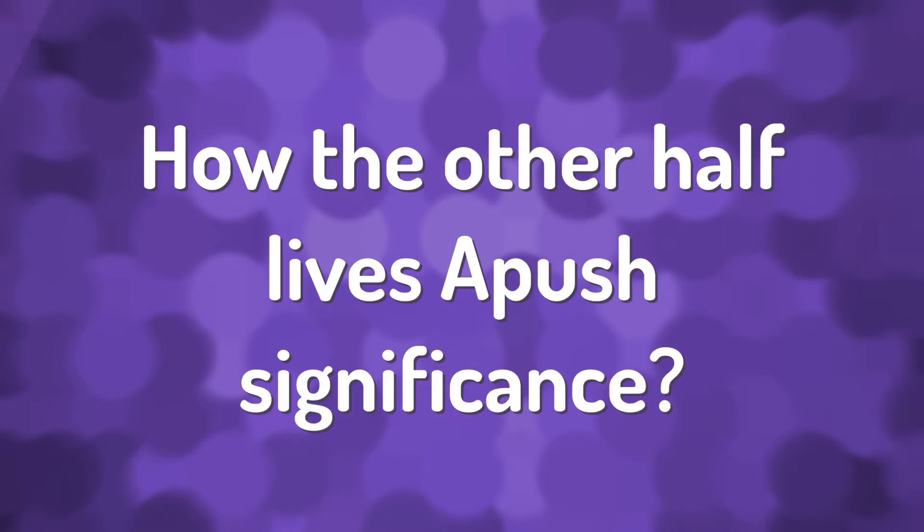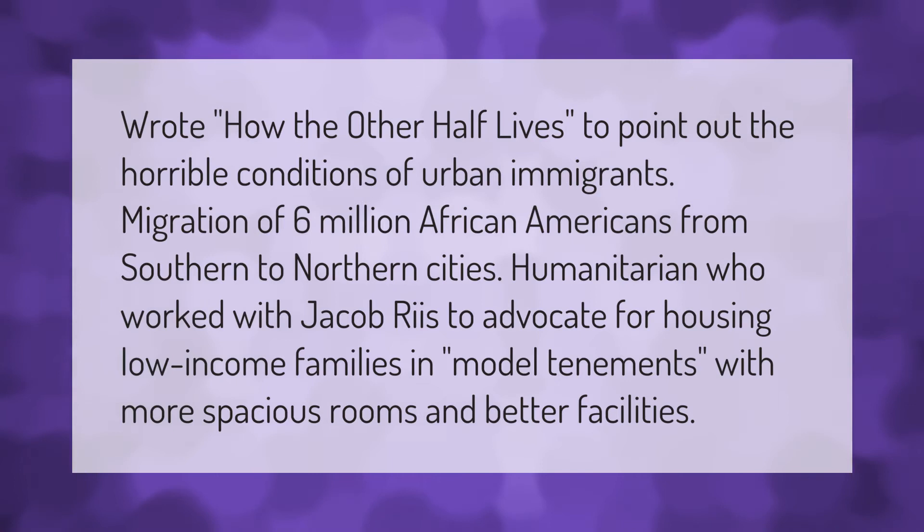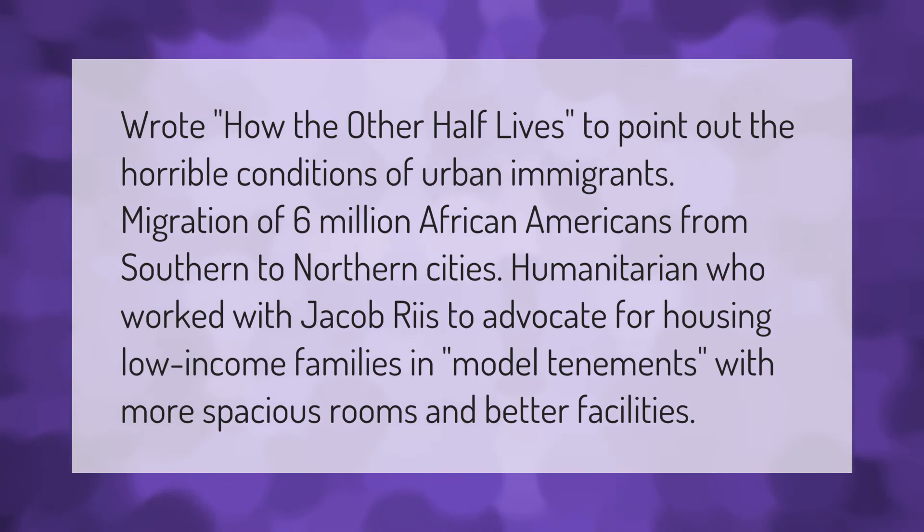Riis wrote How the Other Half Lives to point out the horrible conditions of urban immigrants. This occurred alongside the migration of 6 million African Americans from southern to northern cities. Humanitarians who worked with Jacob Riis advocated for housing low-income families in model tenements with more spacious rooms and better facilities.